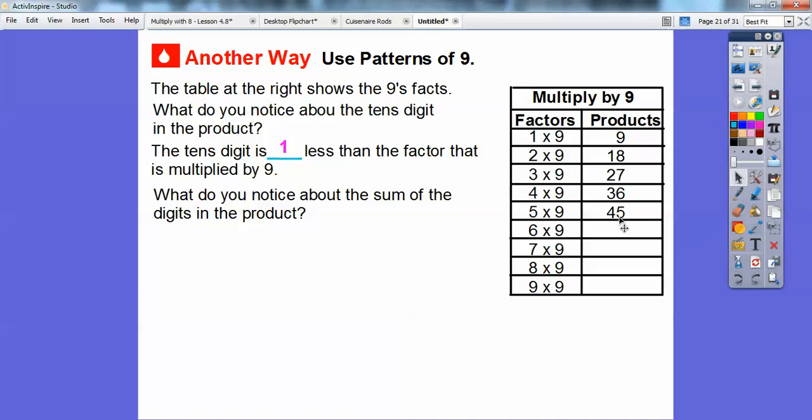Four plus five is nine. So the sum of the digits in this product right here, remember product is the answer to a multiplication. The sum of the digits is nine. So look, let's put that down first. So the sum of the digits is always nine right there.